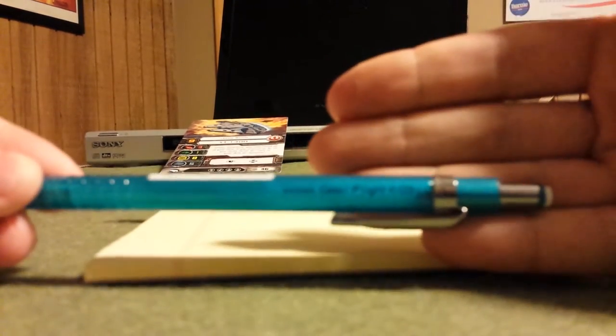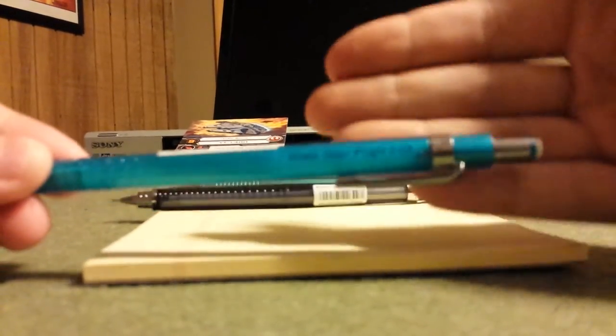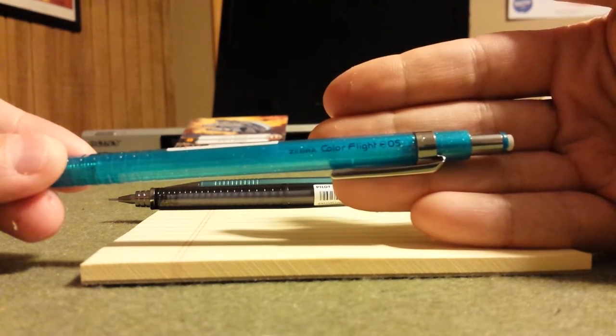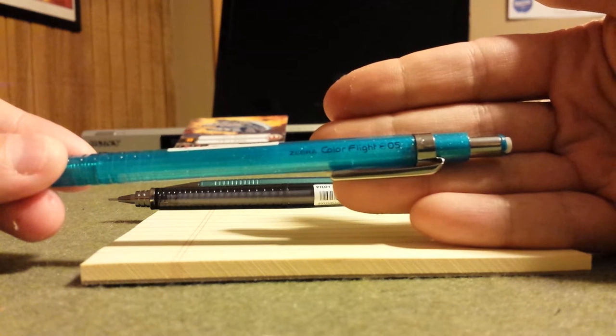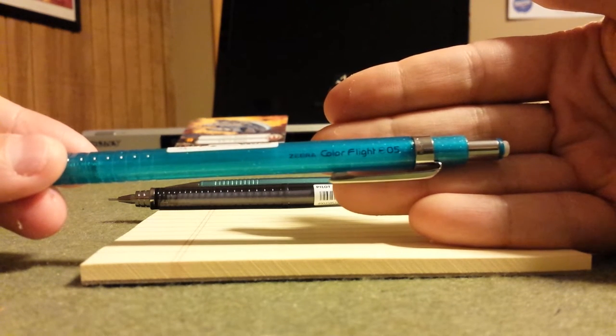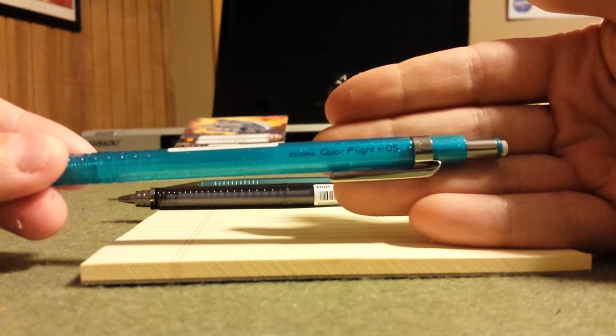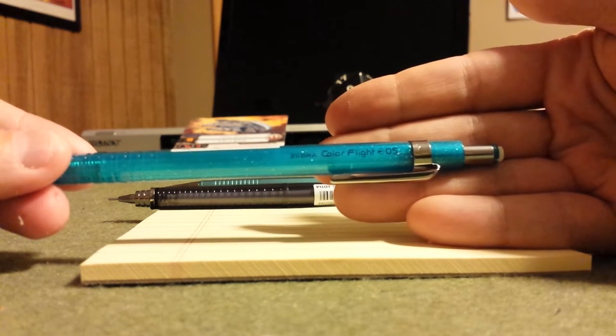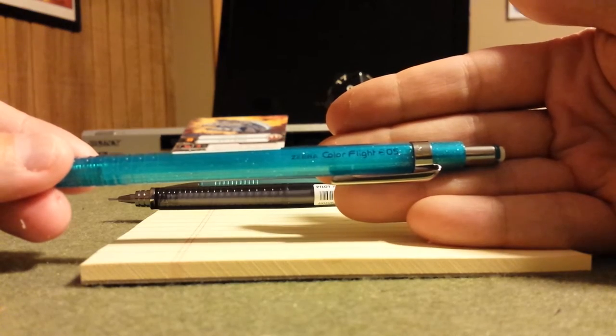Mine is an aquamarine with sparkles and it comes in a wide variety of colors. You can see the name printed on the side, not a lot of contrast between the name and the body. I'll be comparing the Zebra Color Flight to two other pencils that are in its class.